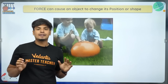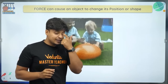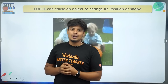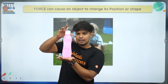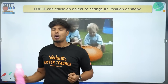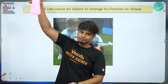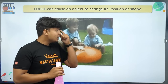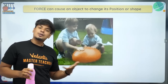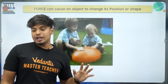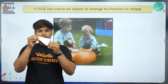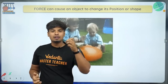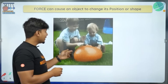Force can do a lot of things. Force can make an object at rest start to move. Force can stop a moving body. Force can change the position or shape of an object. For example, if you take a piece of paper shaped like a triangle and apply force by crumpling it, the shape changes into a ball. So force can change the shape of an object.